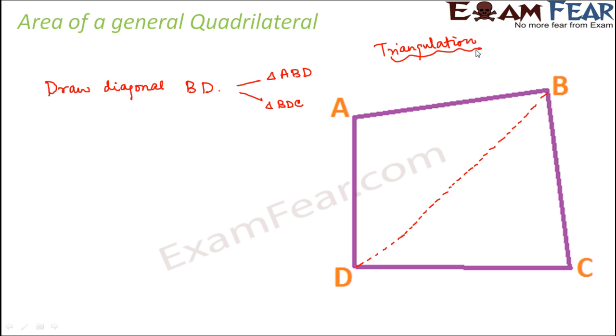Now let us see what we do. The area of the quadrilateral ABCD will now be equal to the area of triangle ABD plus the area of triangle BDC. Now let us try to find out the area of these two triangles.